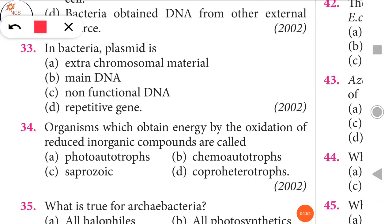Next question: Organisms which obtain energy by oxidation of reduced inorganic compounds are called chemoautotrophs. That is the right answer.